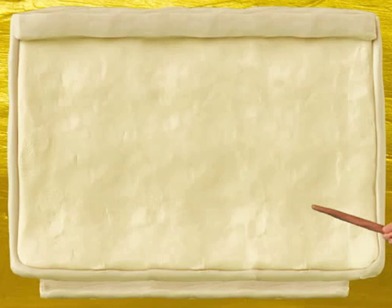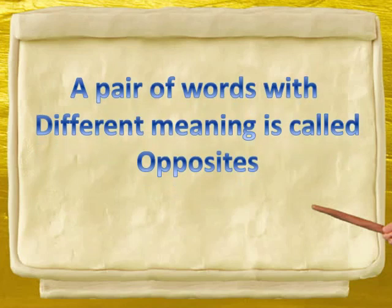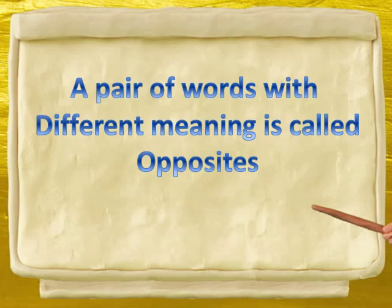So children, come on, let us learn opposites. A pair of words with different meaning is called opposites. यानि, दो words साथ में तो होते हैं लेकिन उनकी meaning बिल्कुल अलग होती है, और उनको हम कहते हैं opposites. और हिंदी में इन्हें विलोम शब्द भी कहते हैं. Opposite मतलब उल्टा.